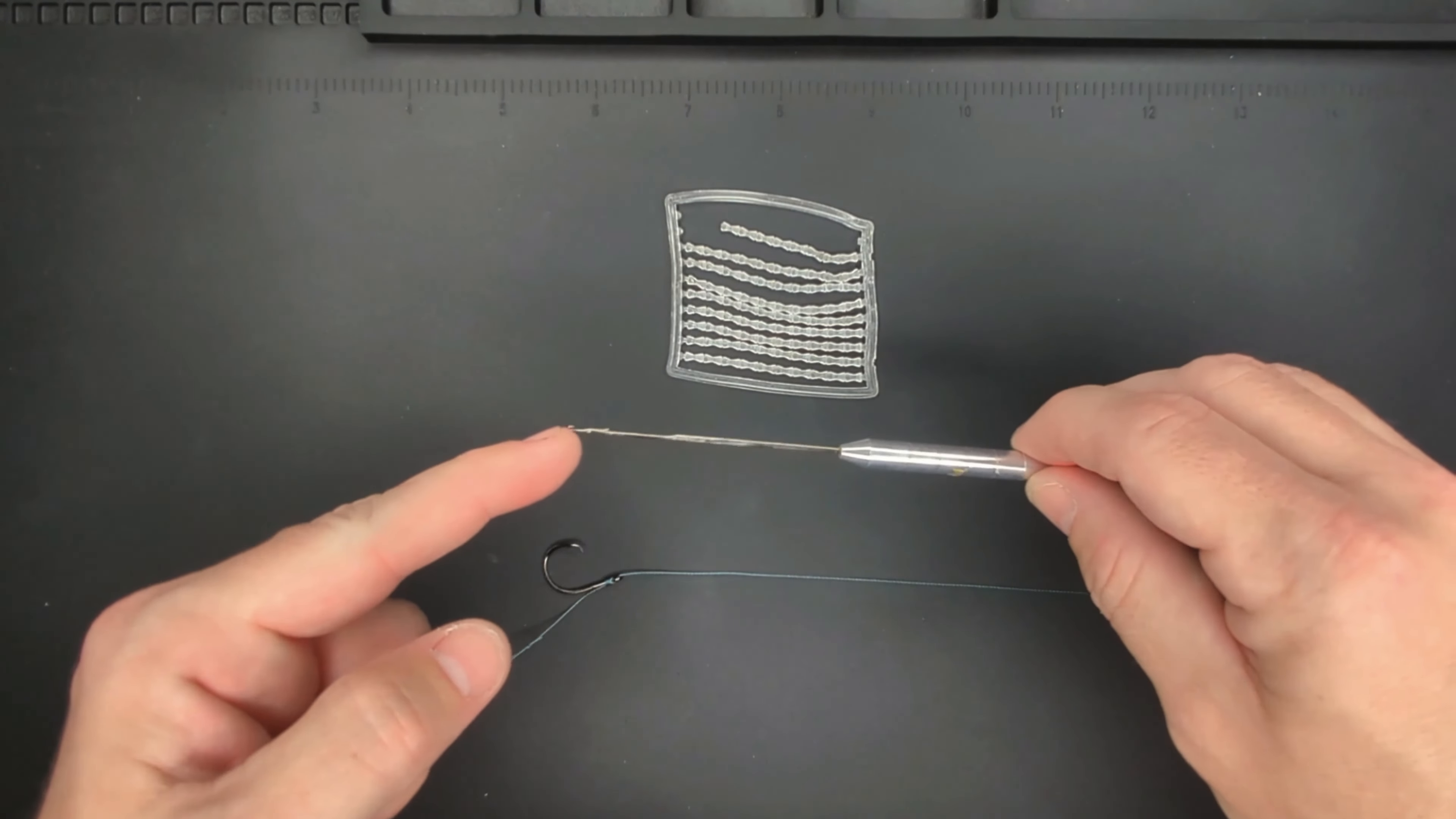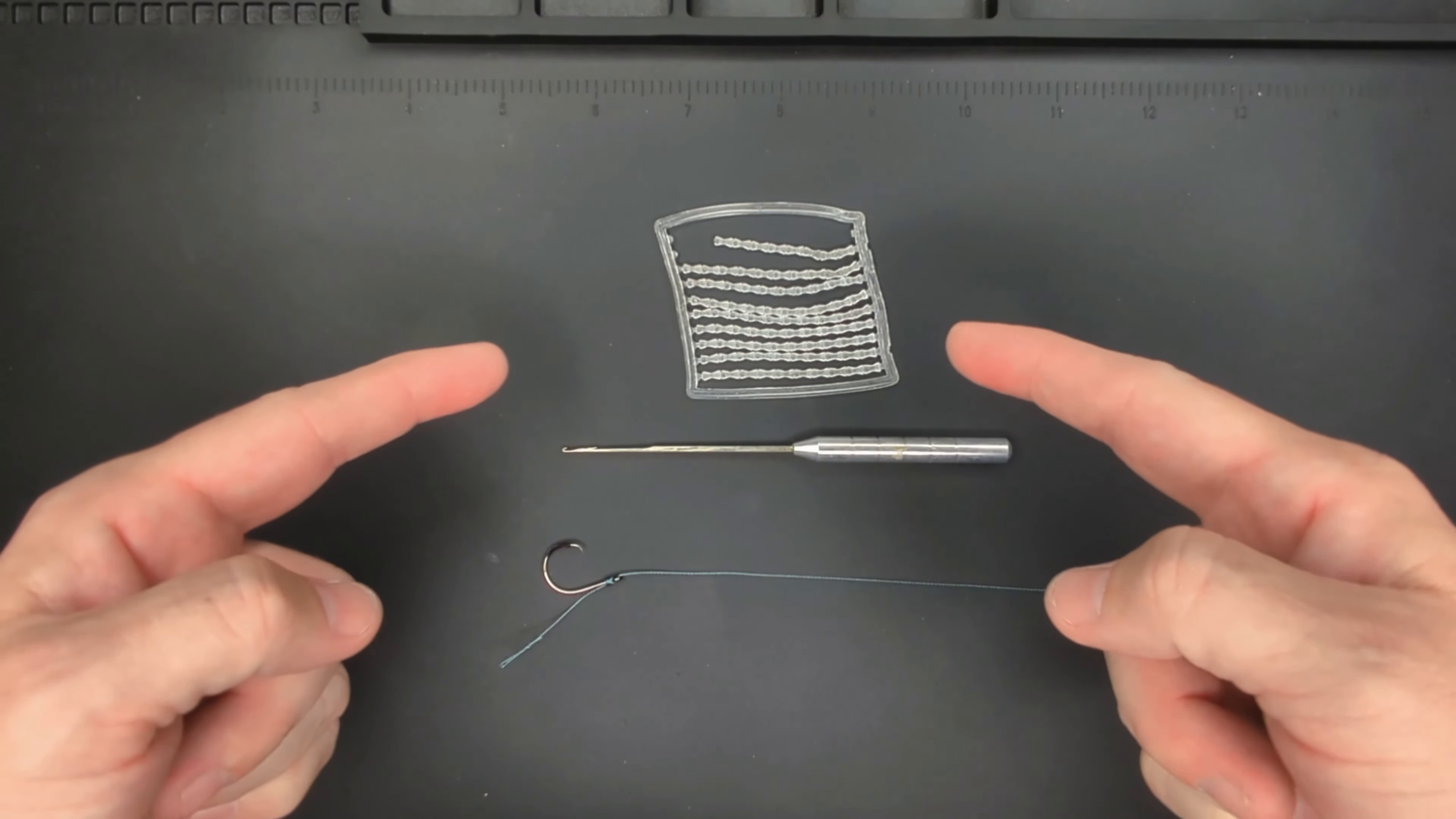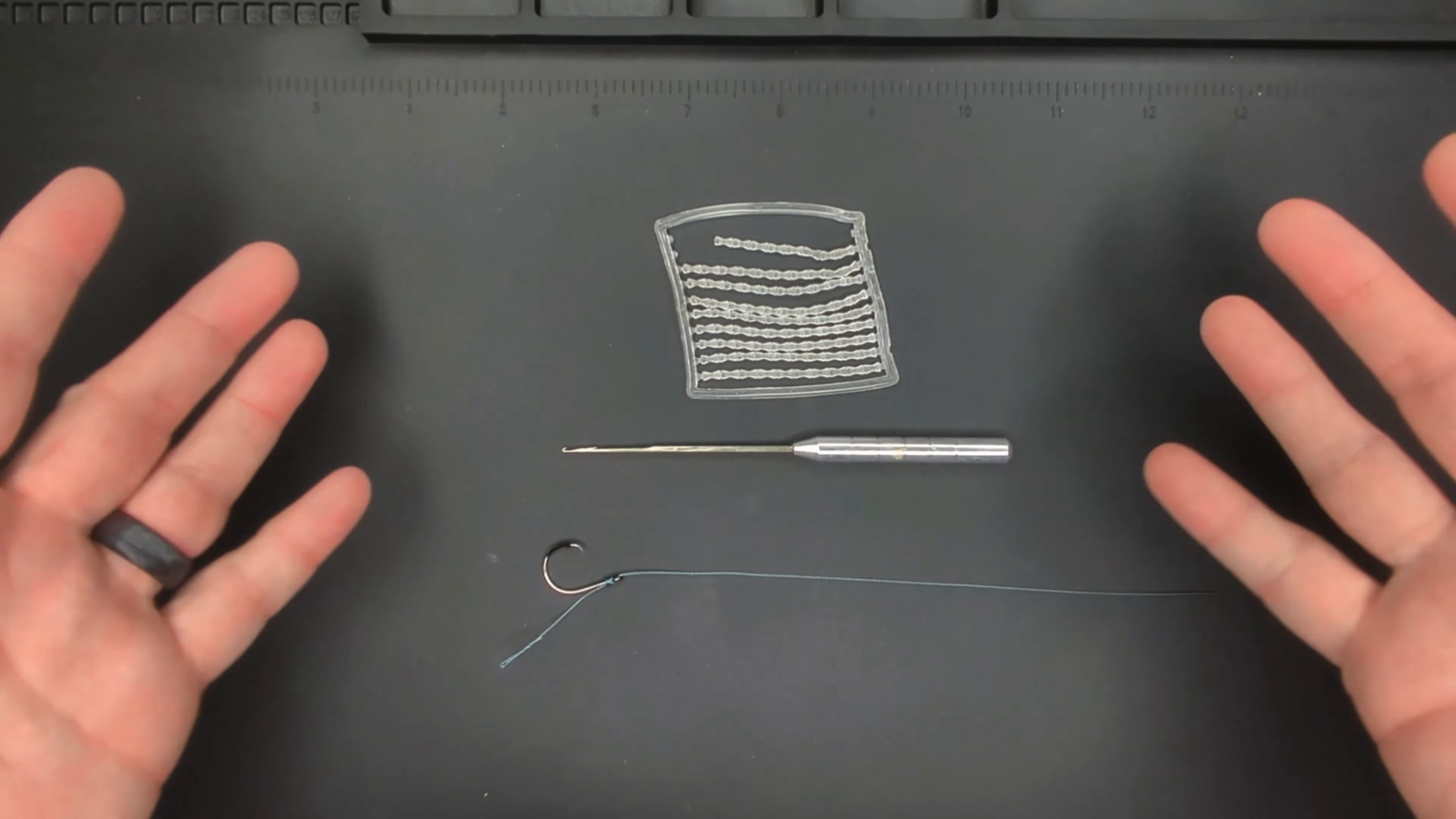To bait this rig you're going to want to get yourself a bait needle and some bait stops. Alternatively I'll show you a method on how to create your own bait needle and bait stops if you don't have these items, but I'll leave a link in the description below. They're very cheap, only a couple dollars.